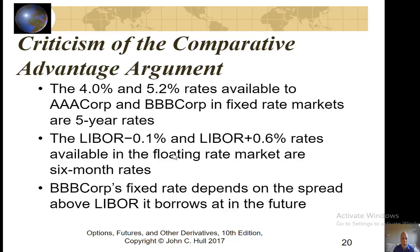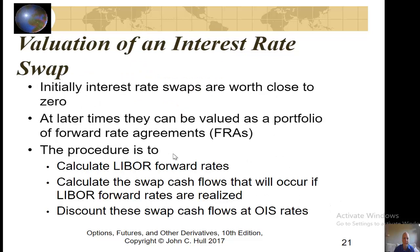Does the comparative advantage argument always work? There are problems with it, but certainly organizations do engage in a lot of swaps. One of the problems is that the 4% and 5.2% rates available to AAA and BBB are fixed-rate five-year rates, whereas the LIBOR rates are six-month rates, so they can change. The spread above or below LIBOR that these institutions pay can change every six months depending on borrowing conditions and credit ratings.